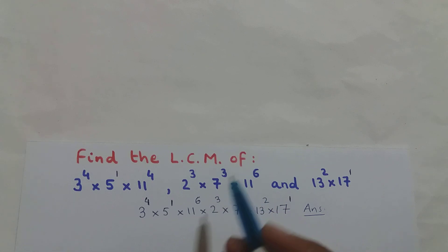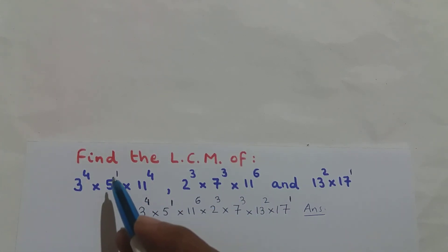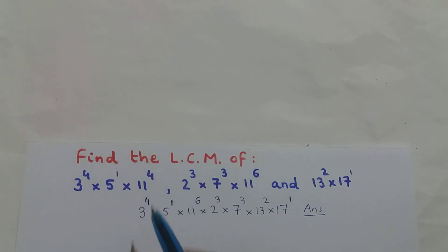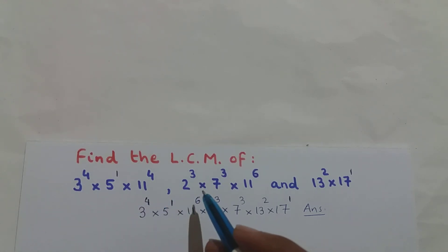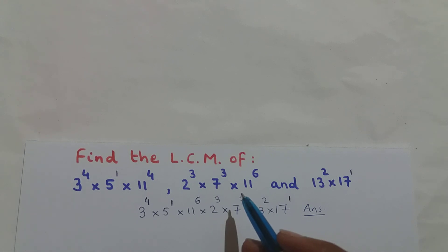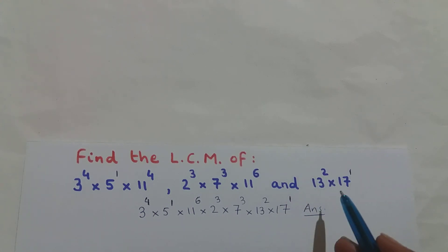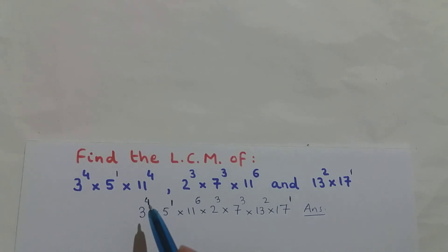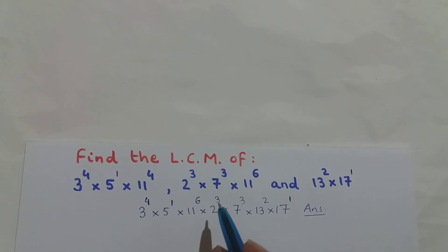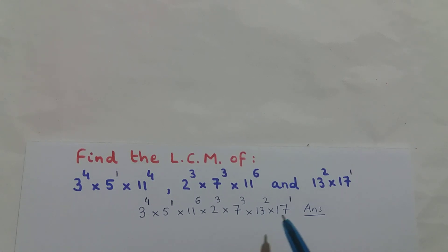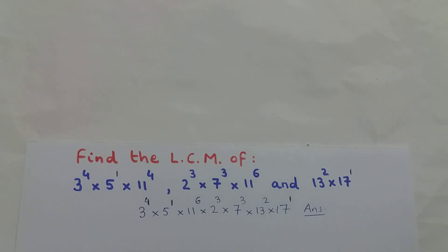So the LCM is: 2 raised to the power of 3, multiplied by 3 raised to the power of 4, multiplied by 5 raised to the power of 1, multiplied by 7 raised to the power of 3, multiplied by 11 raised to the power of 6, multiplied by 13 squared, multiplied by 17 raised to the power of 1. This is the answer for this question.